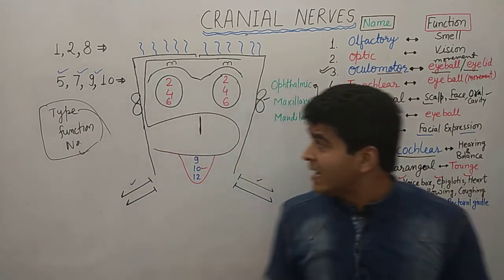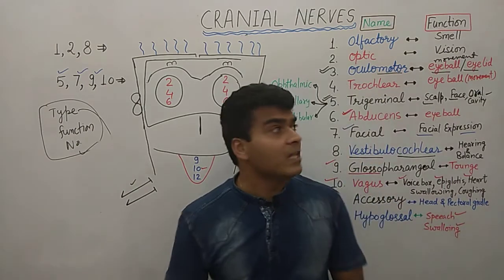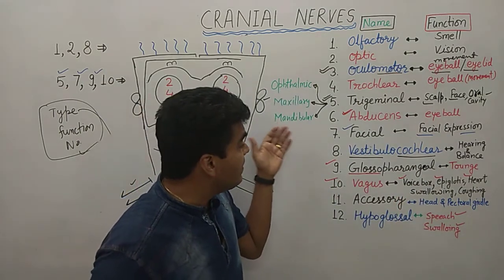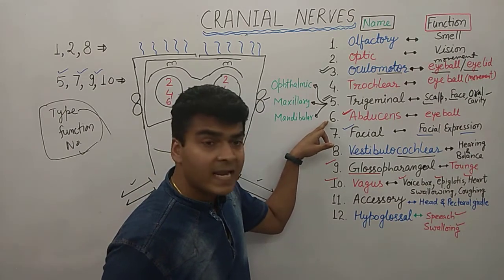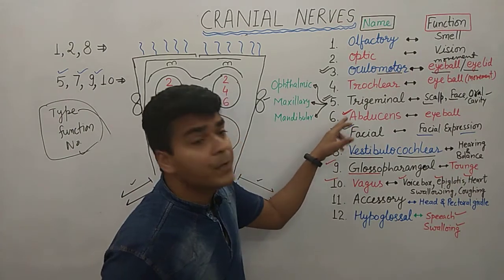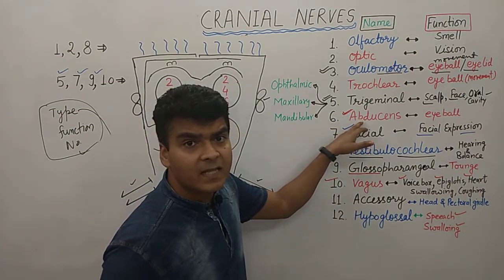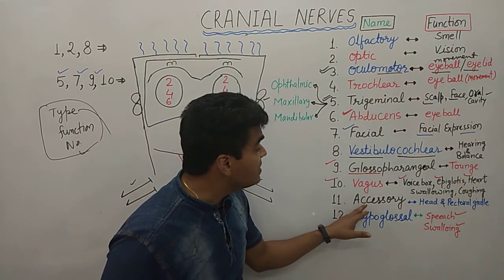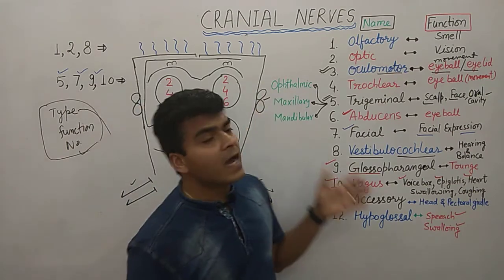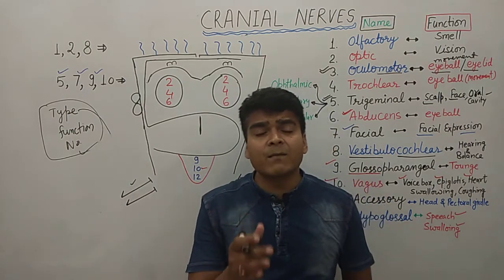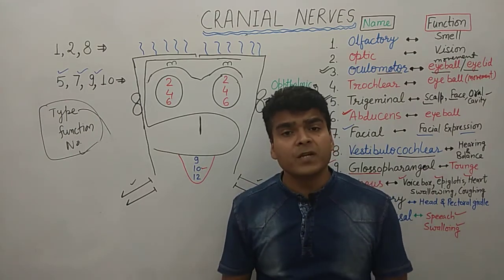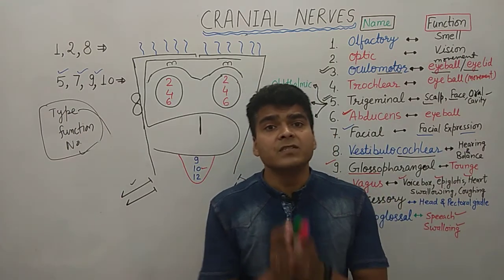A common confusion is between abducens and accessory. Remember: in the alphabet, A comes before B and C, so Abducens comes before Accessory — abducens is number 6 and accessory is number 11. If you draw this diagram once or twice, you will remember all the names and functions. Please share and subscribe to our channel. Jai Bharat, Jai Hind.